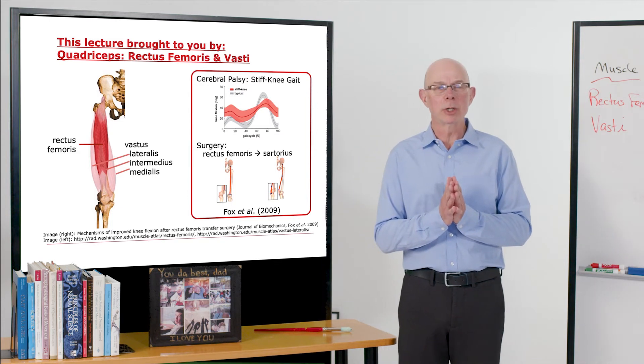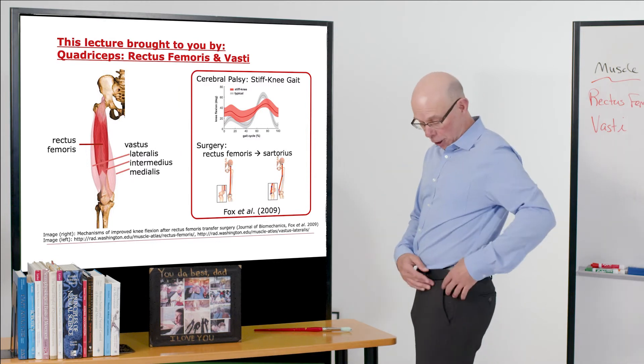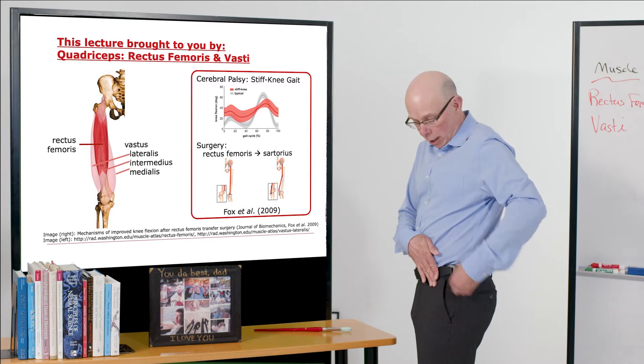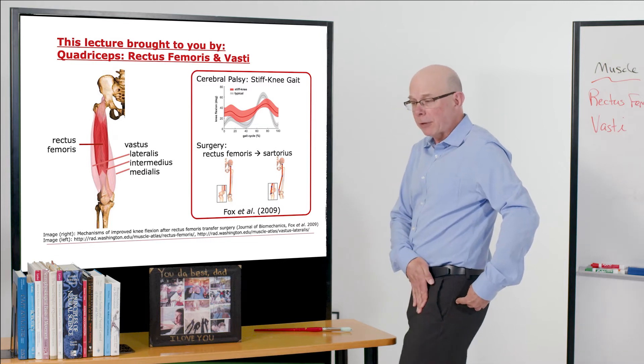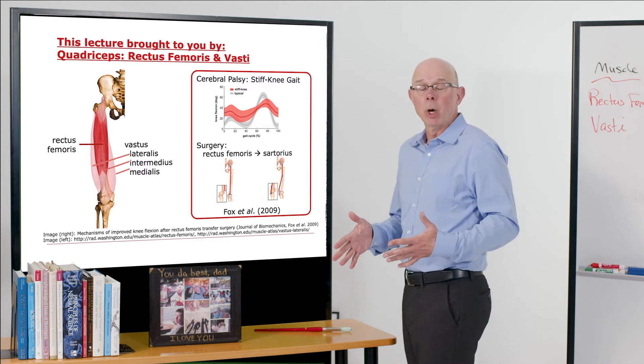The rectus femoris is a key muscle because it crosses two joints. It crosses in front of the hip, starts here, generates a hip flexion moment, and it crosses in front of the knee, so it generates a knee extension moment.